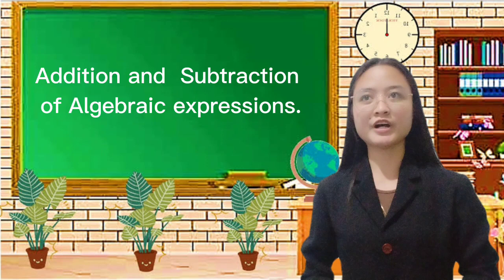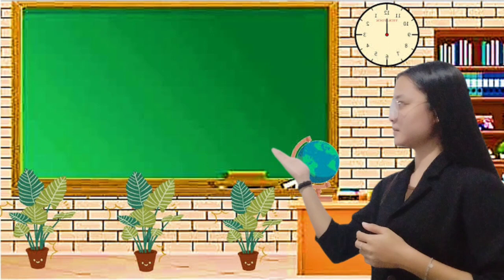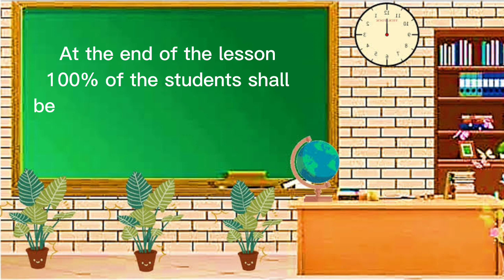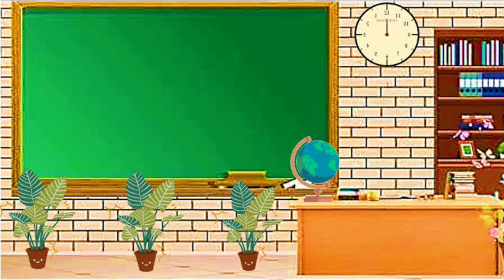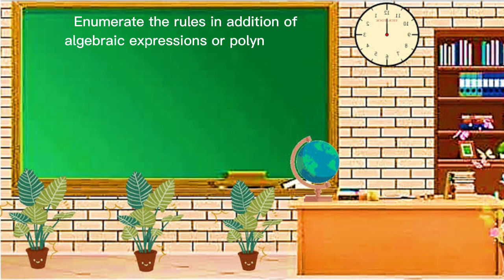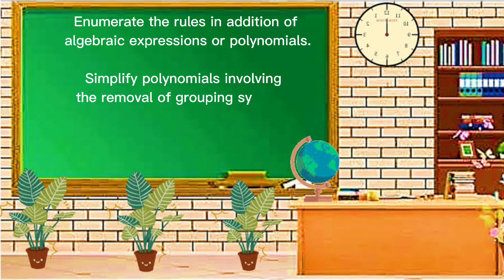Please read our lesson objectives. At the end of the lesson, 100% of the students shall be able to attain at least 75% level of representation to: enumerate the rules in addition of algebraic expression or polynomials; simplify polynomials involving the removal of grouping symbols; and evaluate the value of polynomials or algebraic expression at certain given values.